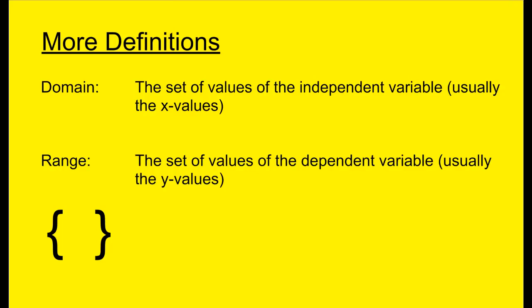Now that you know the definition of what a function and what a relation is, let's look at a couple more definitions. First, domain, and then range. Domain is defined as the set of values of the independent variable, or normally we just think of it as what are the possible x values that exist on this function. The range is just the opposite — the set of values of the dependent variable, or what possible y values exist.